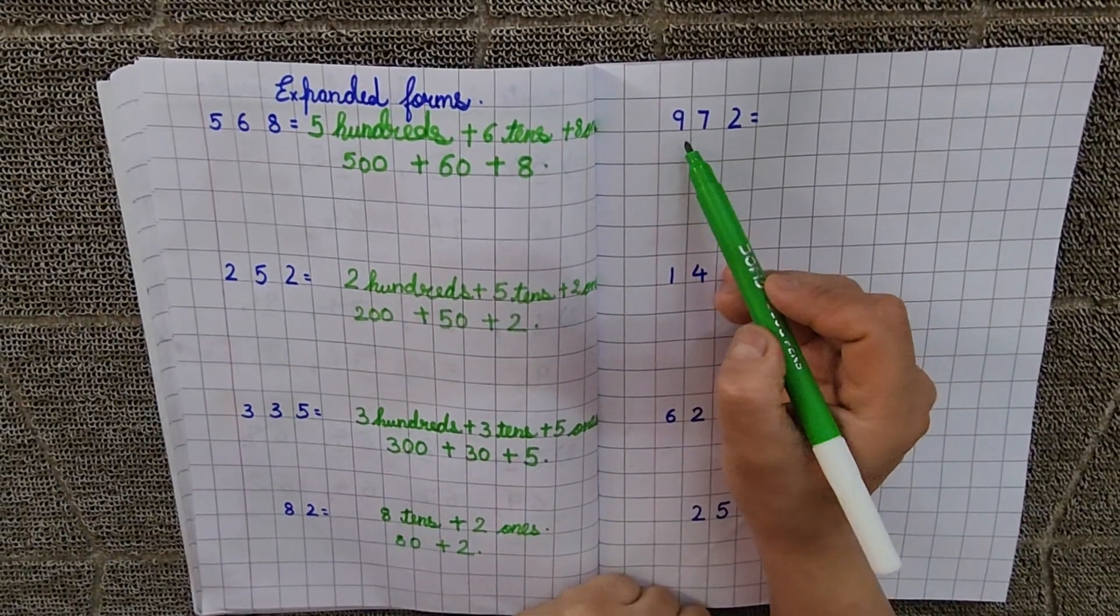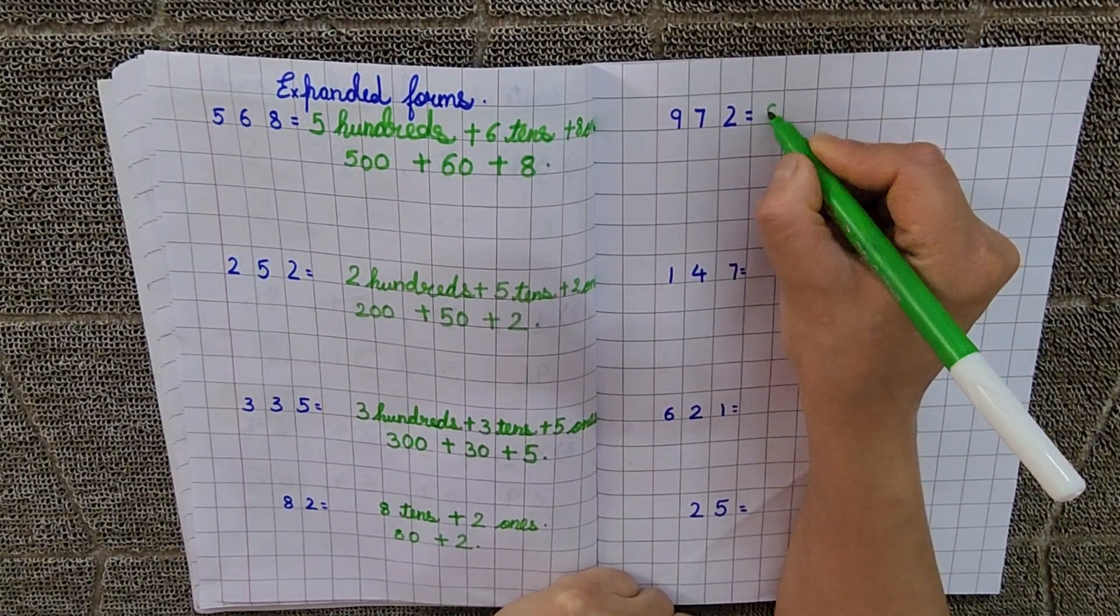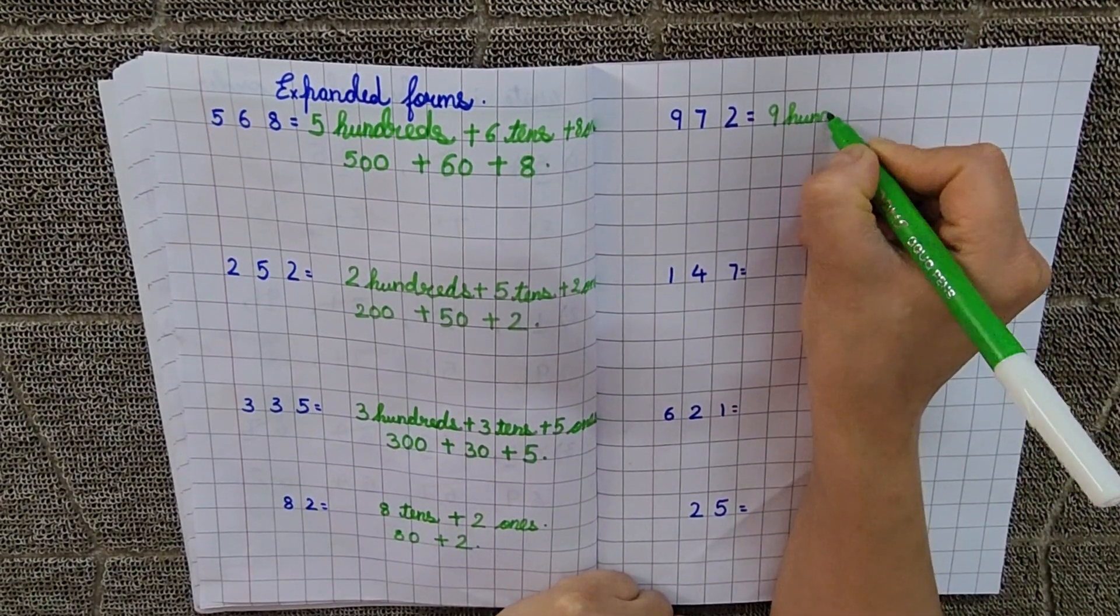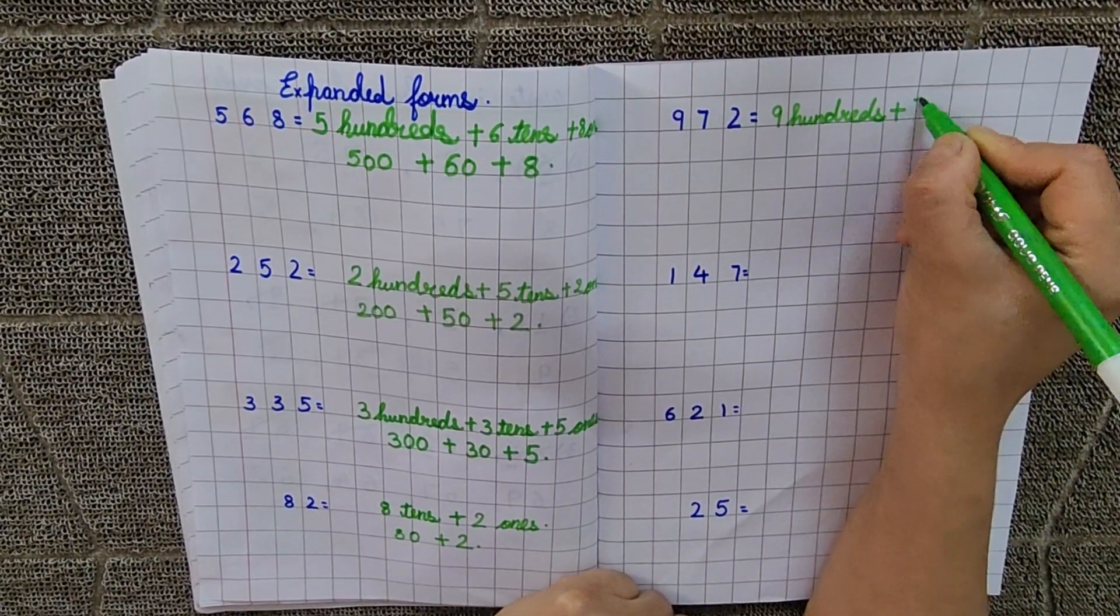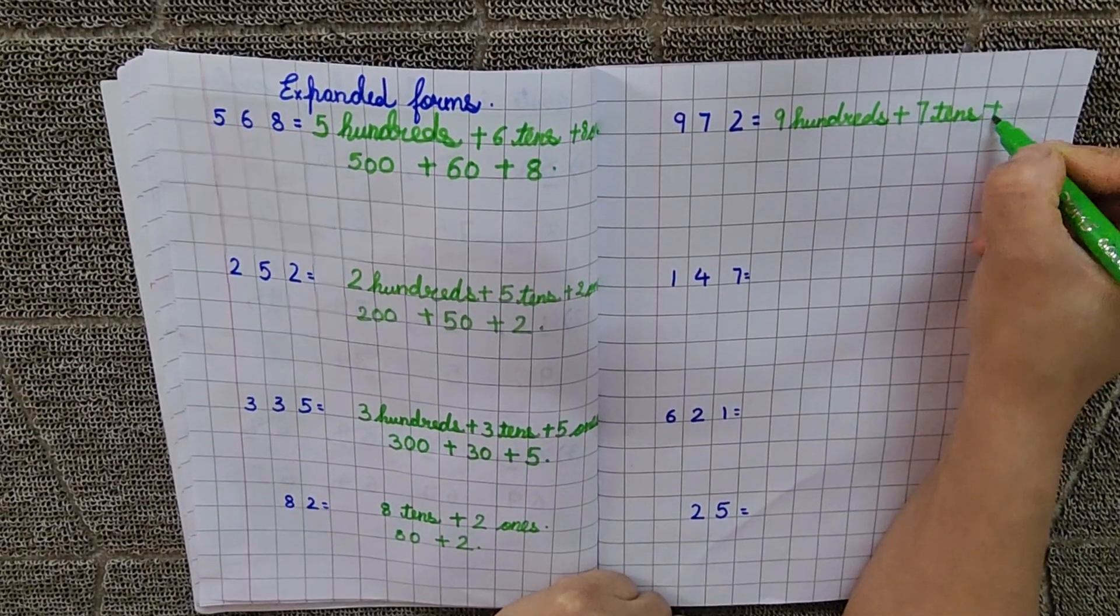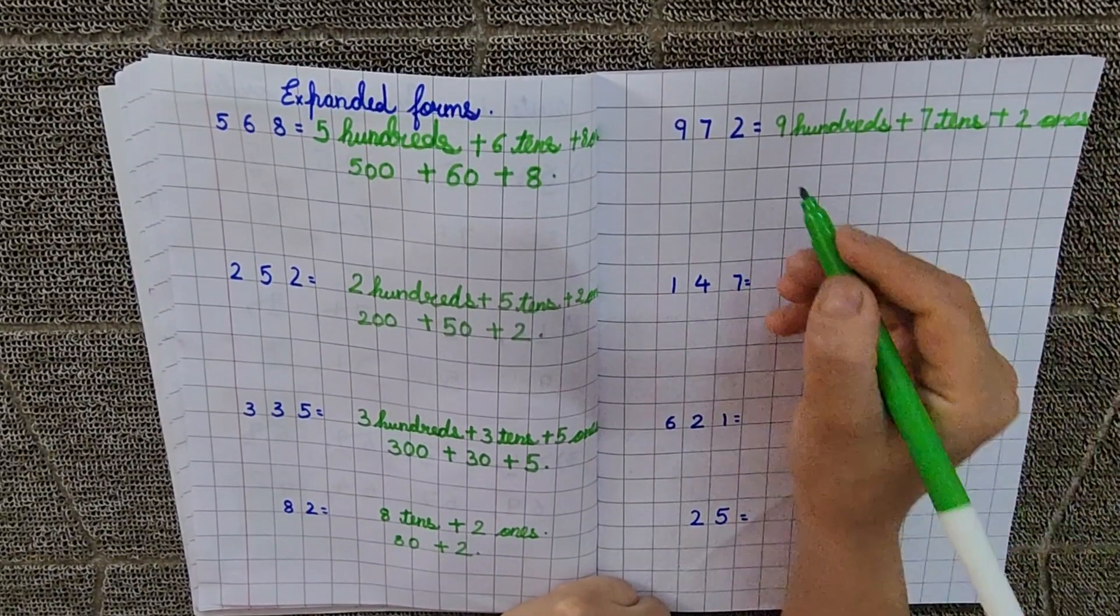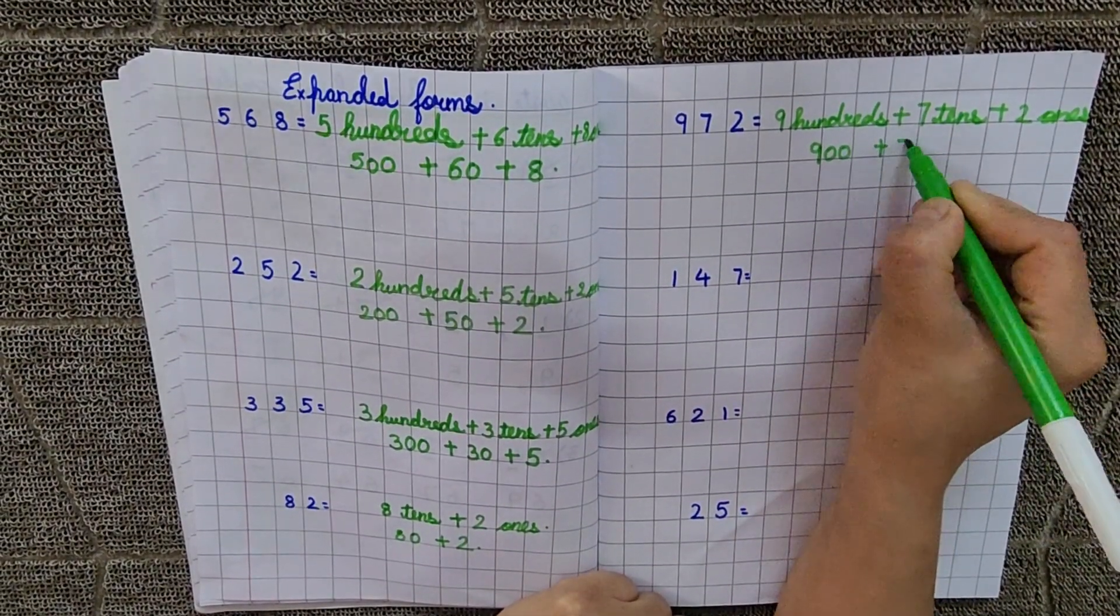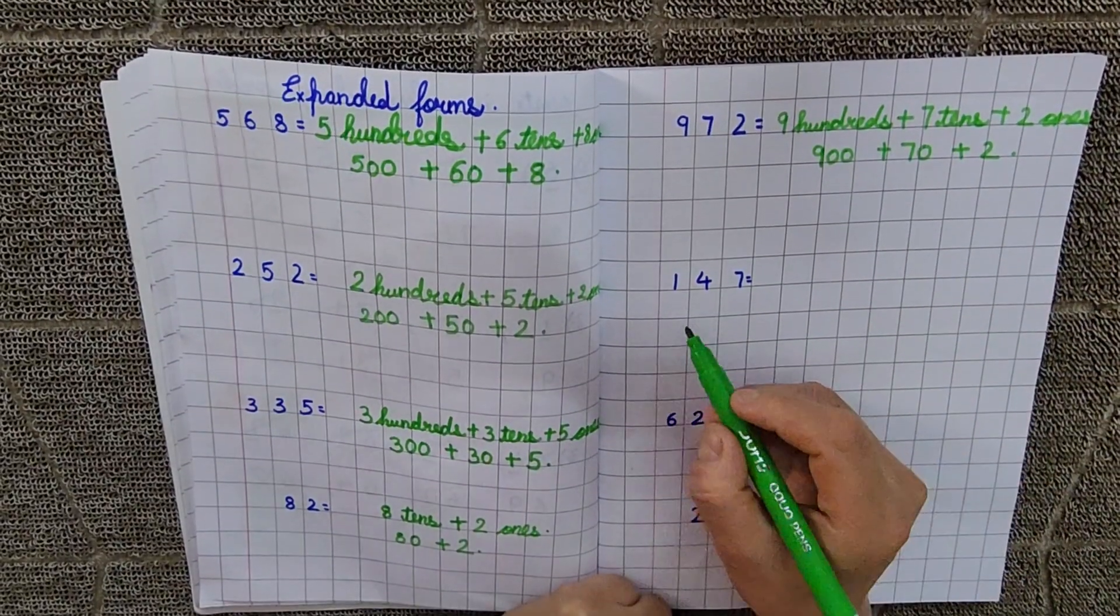Now, next is 972. So, what is the, first of all, 9 hundreds. 900 plus 70 plus 2.